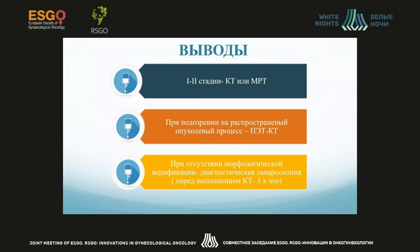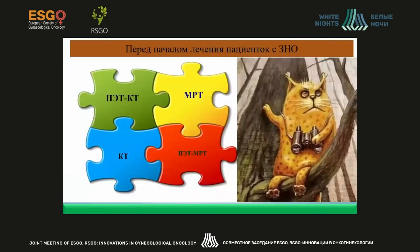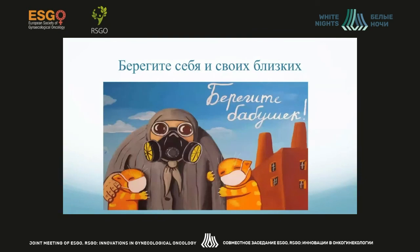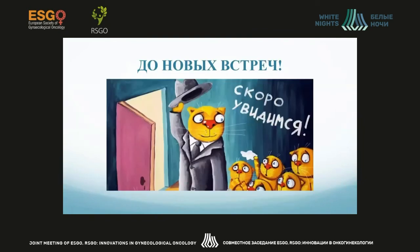Conclusions: if we are treating patients with second-degree disease, the method of choice is CT or MRI; if we suspect advanced cancer, it is PET CT. If there is no morphological verification, we do MRI of at least three areas. In our arsenal, we have a great number of modalities — PET CT, MRI, CT, and PET MRI — and we need to be clear which diagnostic method to use for each patient. Thank you for your attention. Take care of yourself and your nearest and dearest; I think we will see each other face to face in the future. I am very thankful to everyone who listened and to the organizing committee.